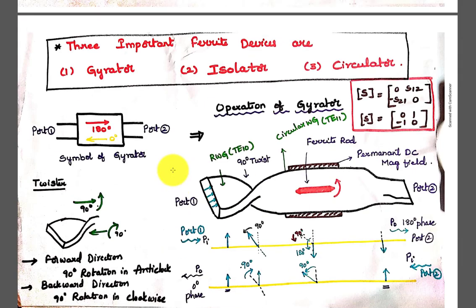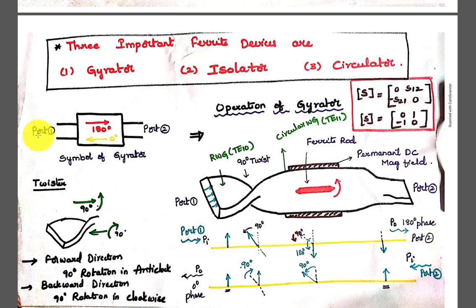The three important ferrite devices studied in our syllabus are the gyrator, isolator, and circulator. Coming to the gyrator — it is represented by its schematic symbol. It is simply a two-port network of a non-reciprocal device, having port 1 and port 2. In the forward direction, when the signal transmits from port 1 to port 2, it offers a 180-degree phase shift.